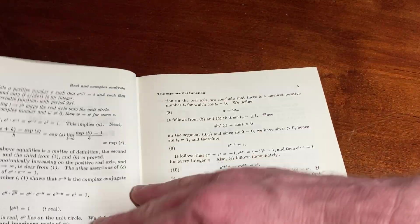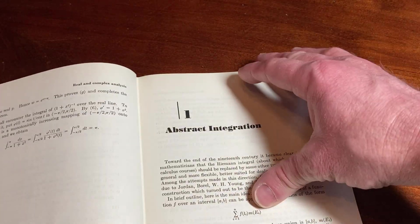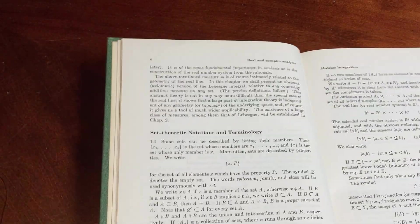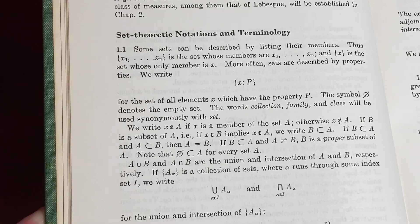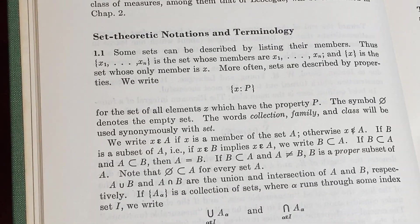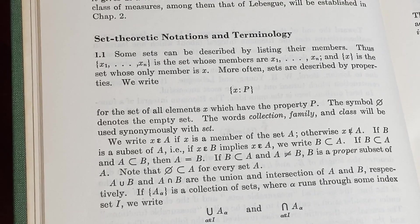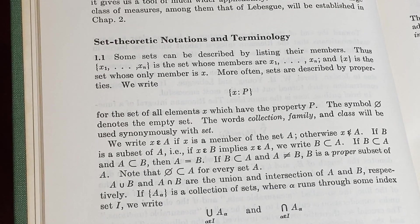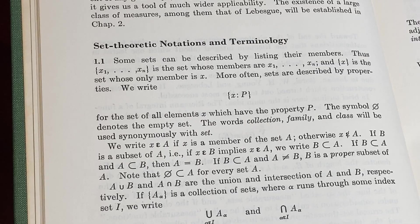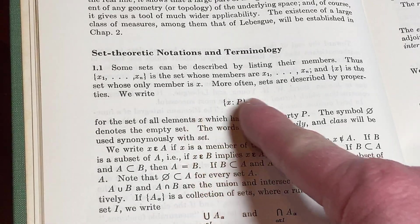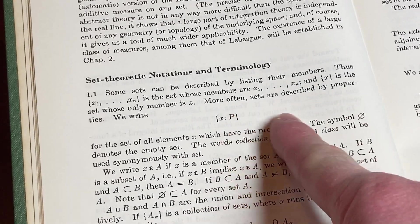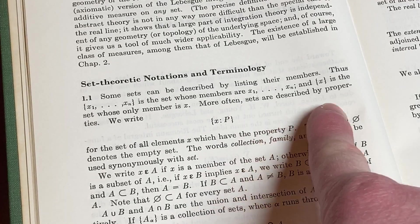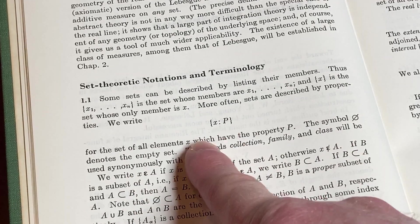Let's just try to go to the very beginning so you can see how it starts, after the preface. Set theoretic notations and terminology: some sets can be described by listing their numbers.